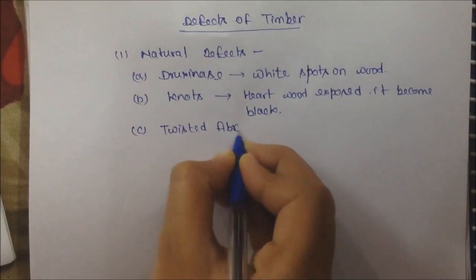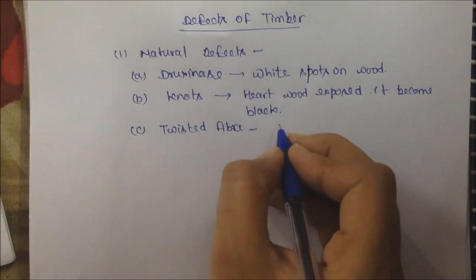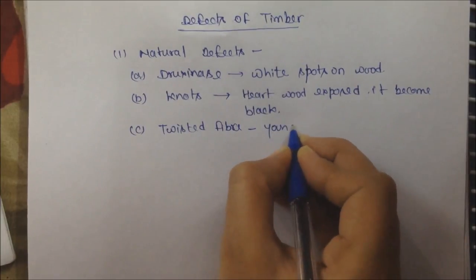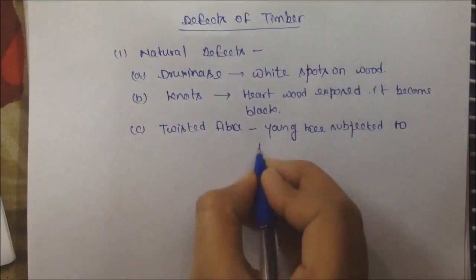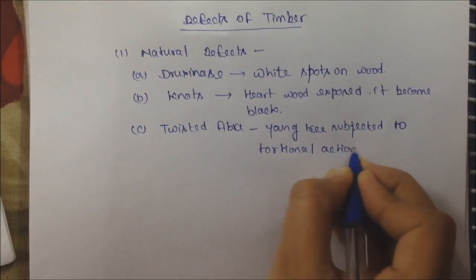Third is twisted fiber. When the tree is young, it rotates from the wind. The fibers are twisted. Then its strength increases. We use this wood as a pole and railway sleepers.